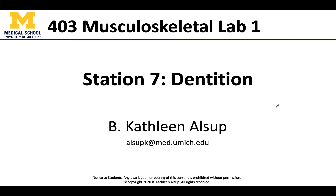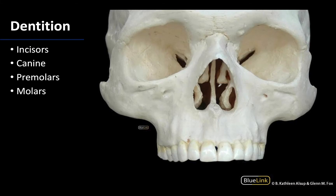Hello anatomy friends, this is Dr. Alsup and welcome to station number seven in our first musculoskeletal lab. In this lab we are going to focus on teeth — the dentition. While we talked about the juvenile dentition in the lecture videos, we're really only going to ask you to identify the adult dentition, and fortunately the shape of the teeth are going to be pretty similar between adults and juveniles.